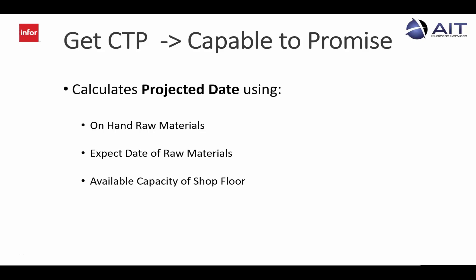The Get CTP uses the available raw material inventory, the dates of expected raw material inventory, and the available shop floor capacity to calculate the projected date a product will be available.